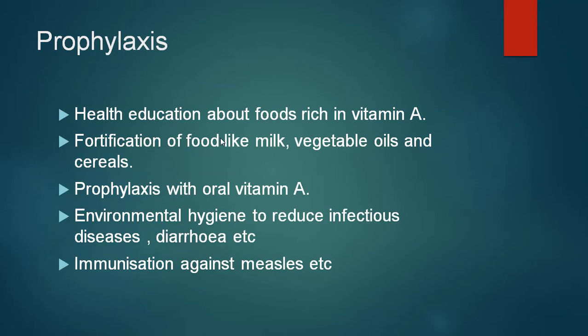Prophylaxis for vitamin A deficiency is very important. Health education about food rich in vitamin A must be given in schools and to parents. Fortification of food like milk, vegetable oil and cereal can also be tried. Prophylactic vitamin A is given every 6 months as 200,000 units. Environmental hygiene to reduce infectious diseases such as diarrhea is important, as is immunization against measles — once the child is immunized, vitamin A deficiency may not be precipitated.